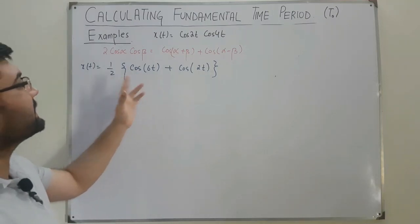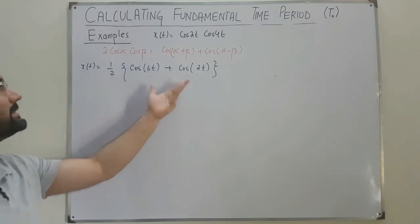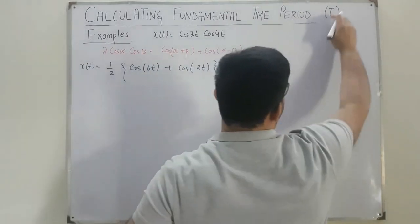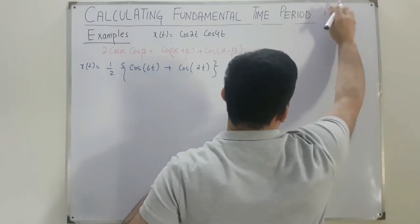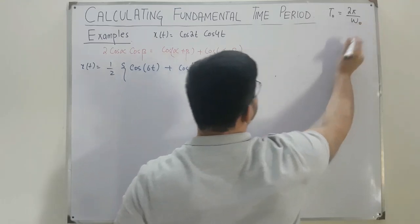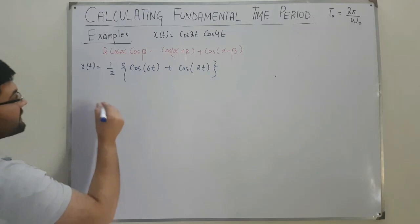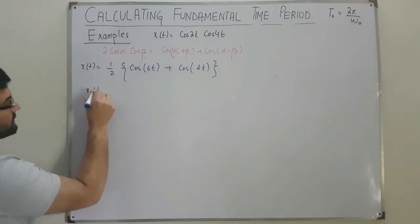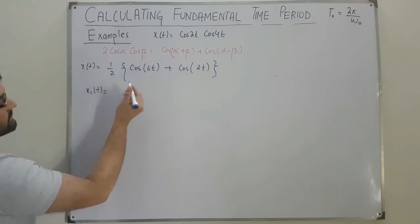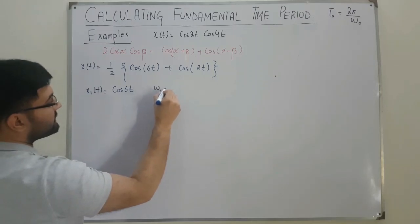We can neglect the 1/2 factor because it does not affect ω₀ or T₀ = 2π/ω₀. Breaking into component form: x1(t) = cos(6t), which means ω1 = 6.